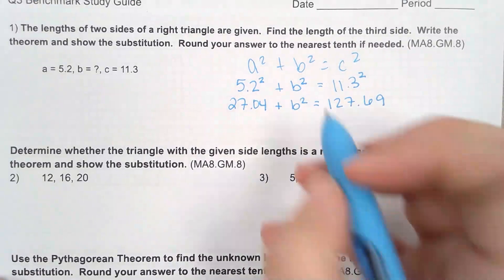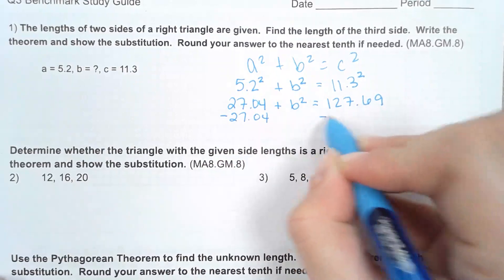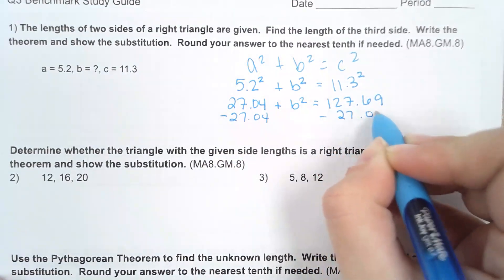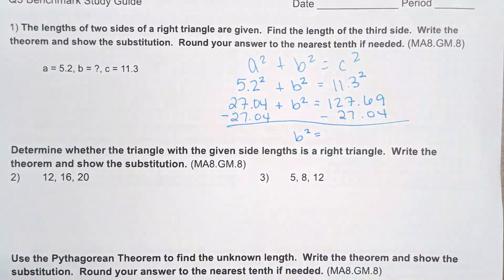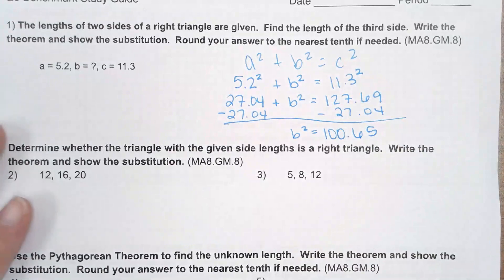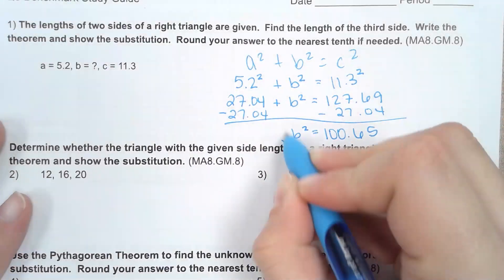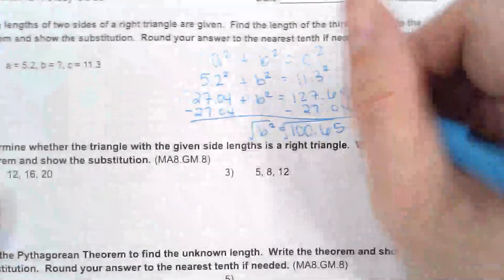Next step, to get b squared by itself, I need to move this 27.04 by subtracting it on both sides. So we get b² = 127.69 − 27.04 = 100.65. And last step, to get b by itself, the opposite of squaring is square rooting. So the square root of 100.65, rounding to the nearest tenth, gives us 10.